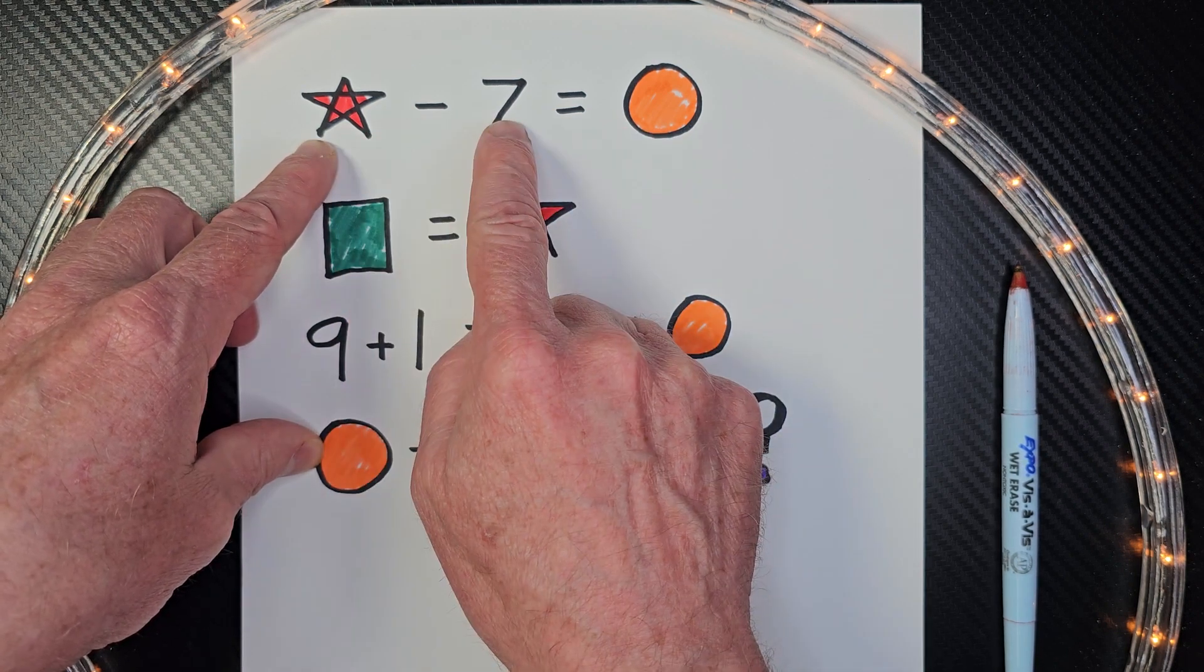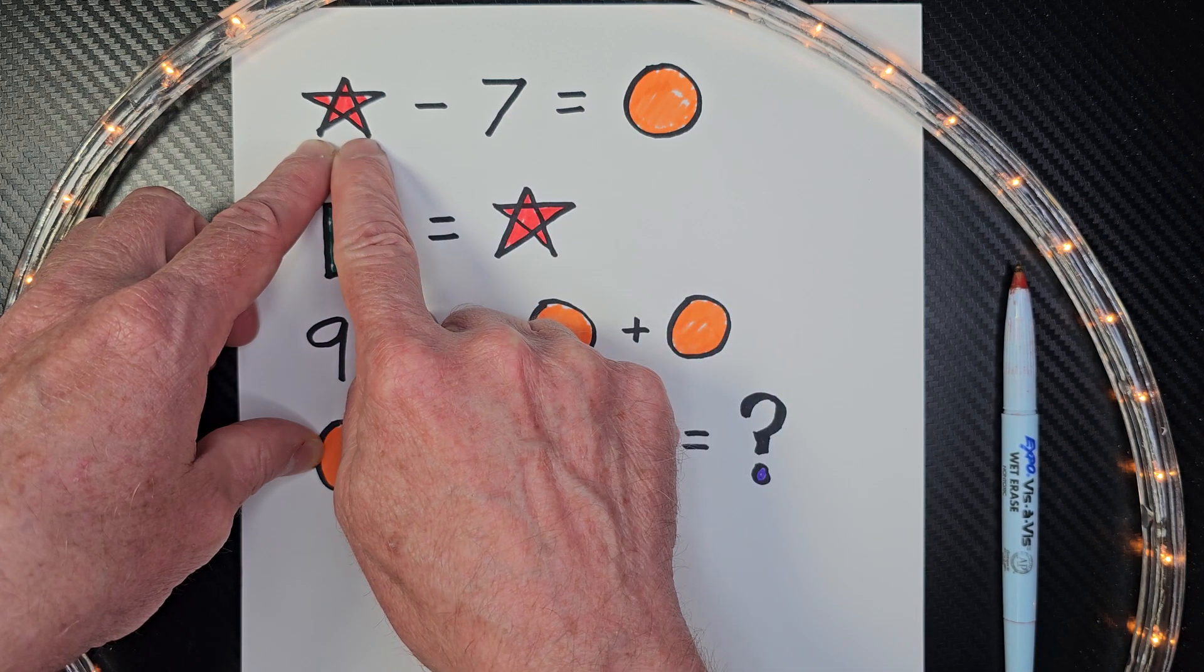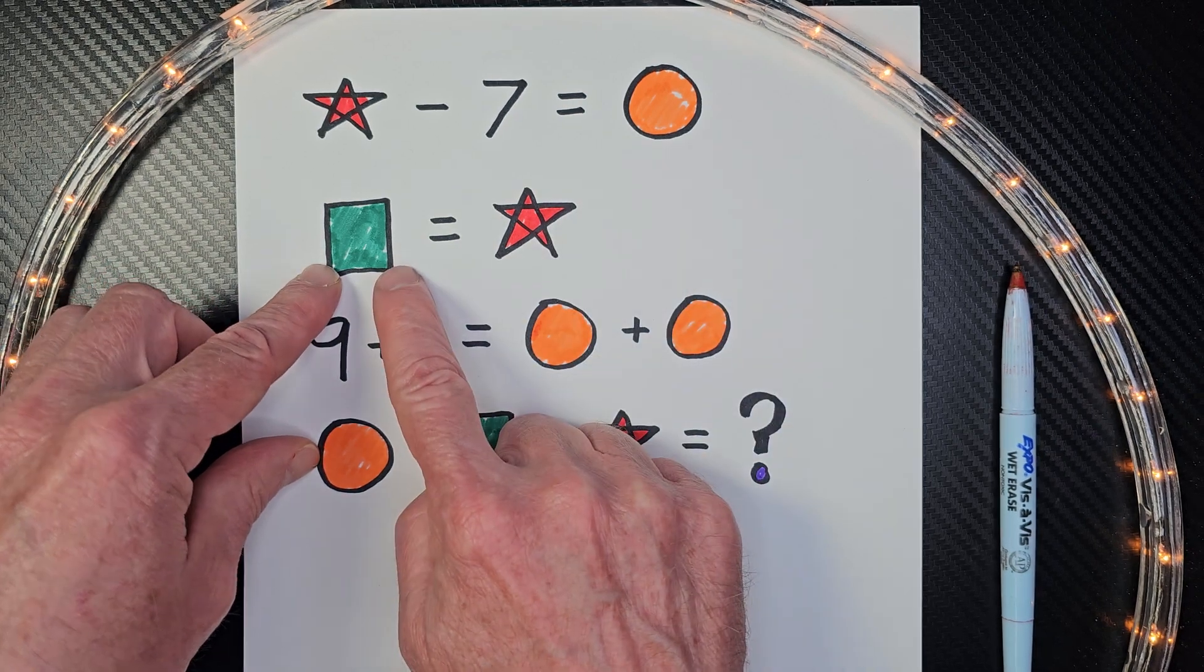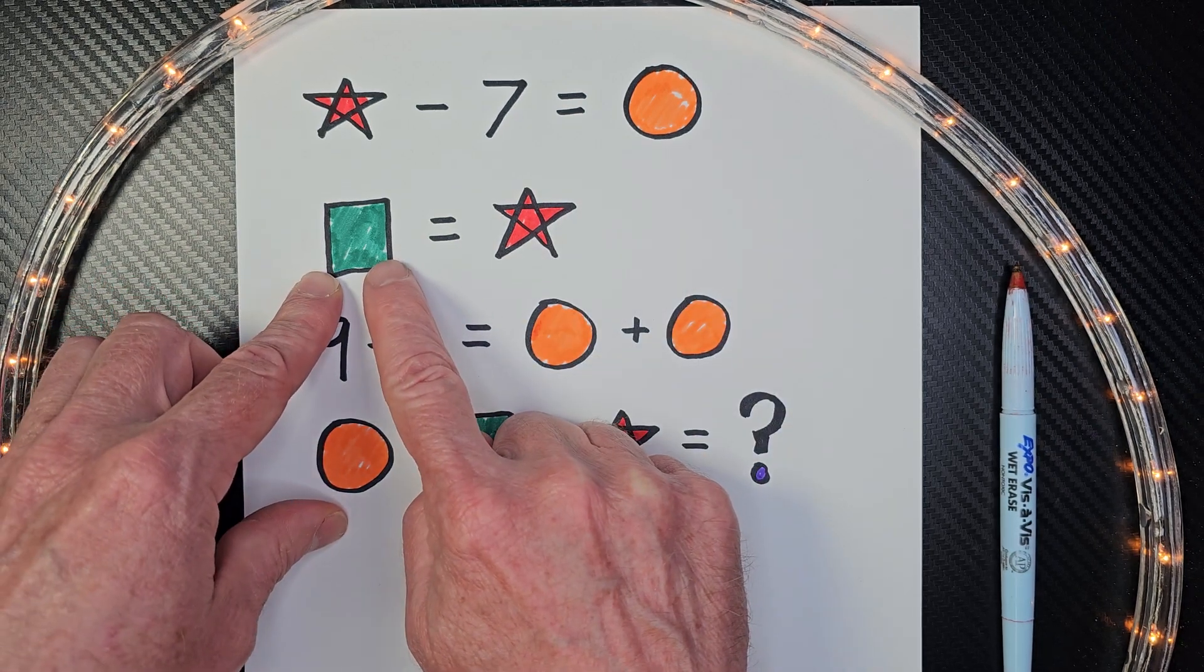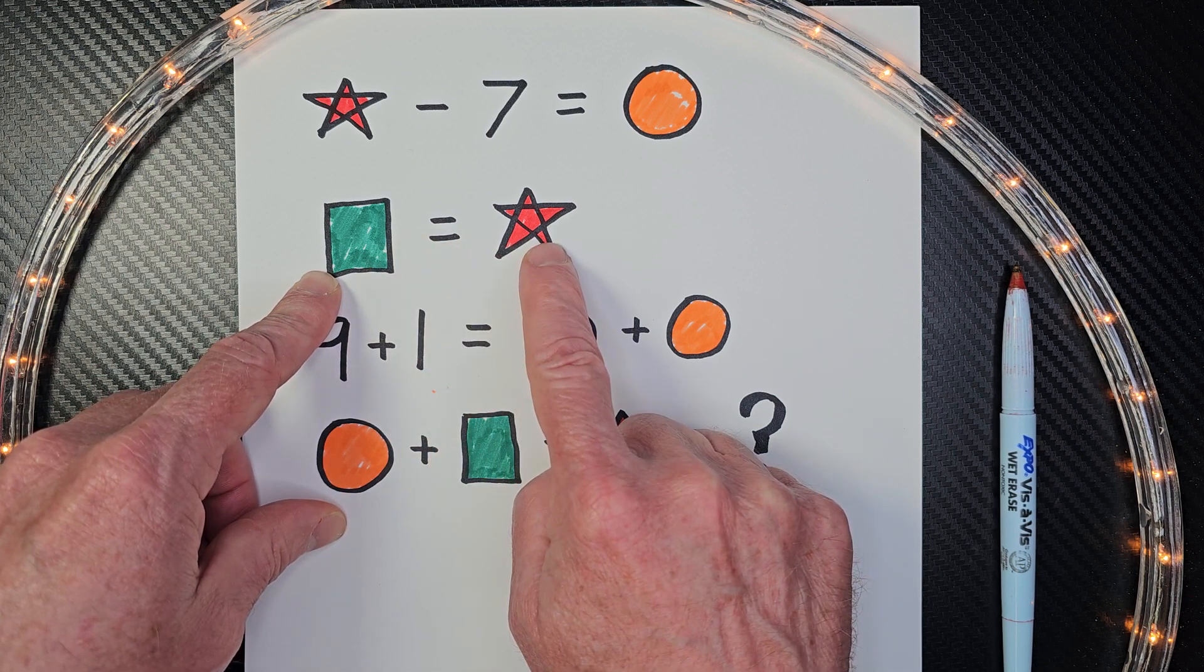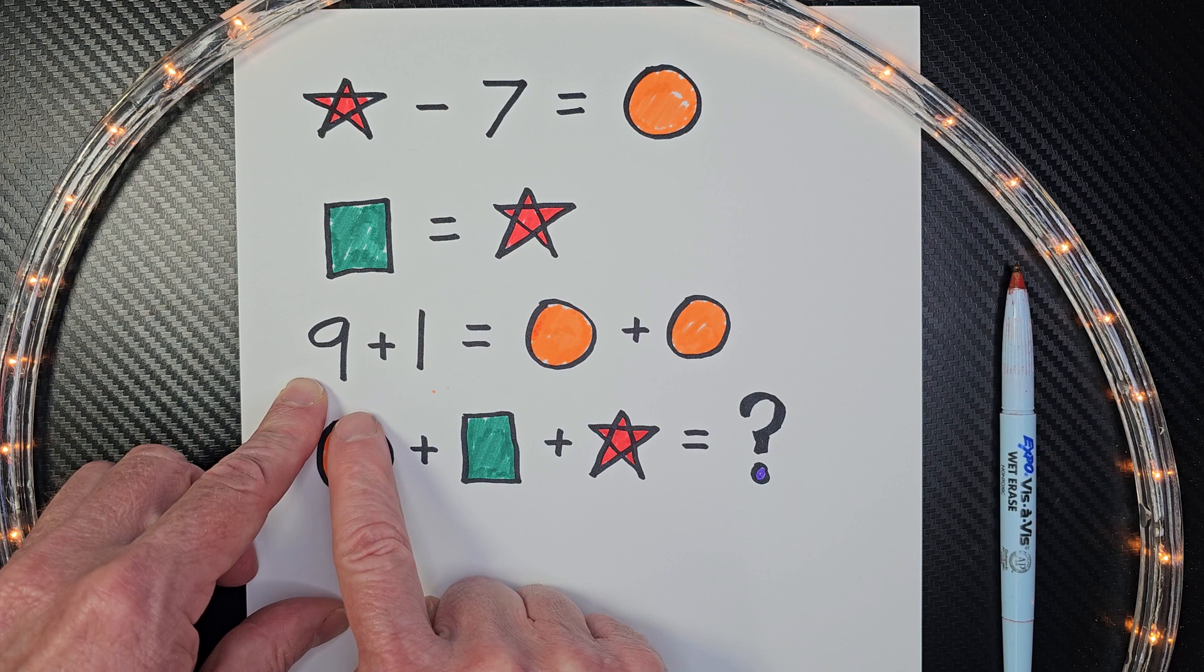This is interesting because the rectangle here, the green rectangle, is equal to the star, so whatever value this one is, it's going to be the same here. This one has too many variables to put in there.